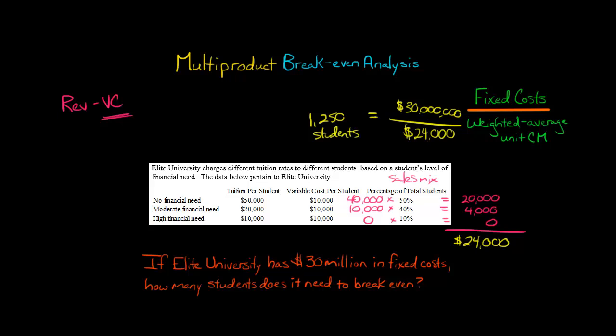The sales mix is so important because when we calculate the weighted average, we're assuming 50% of this type of student, 40% of that type, and so forth. If this turns out to be wrong, it's not going to be $24,000 — it'll be something else. So the break-even point is highly dependent on the sales mix.